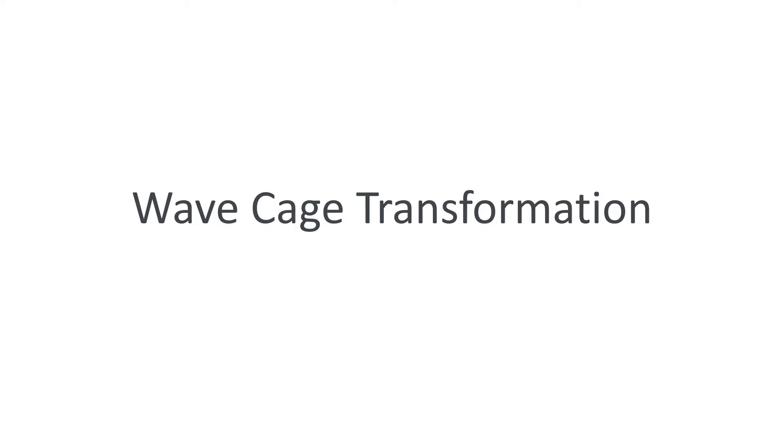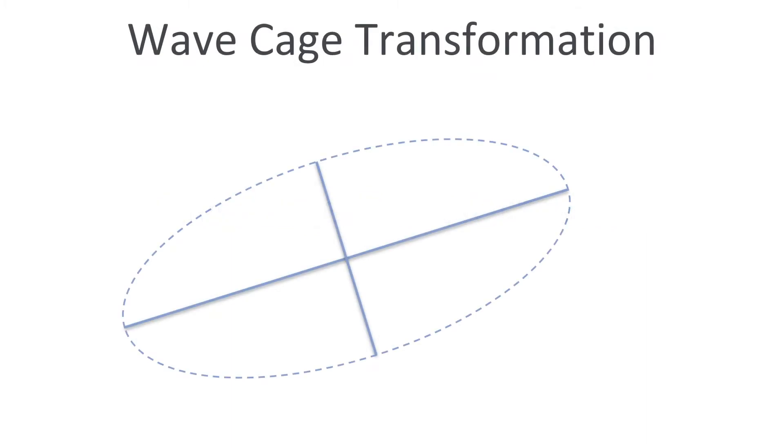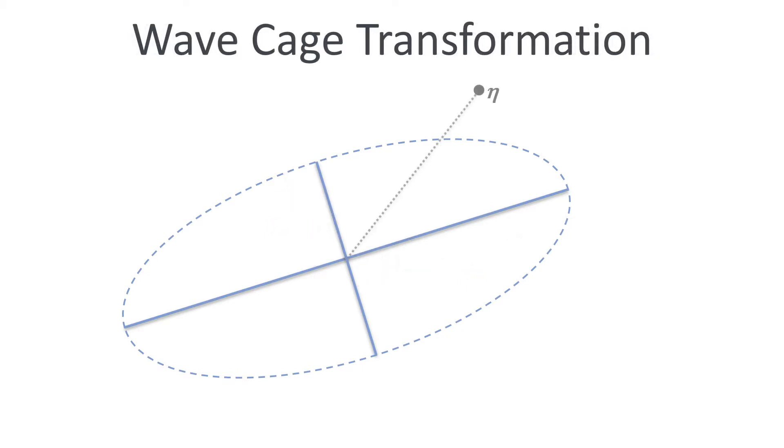Let's have a look how an individual wave cage transforms a point on the water surface. We start with the wave cage here drawn as an ellipse. It is defined by its major and minor axis A1 and A2, as well as the respective major and minor radii R1 and R2. Now given some input surface point eta, our goal is to constrain eta to lie inside the cage.